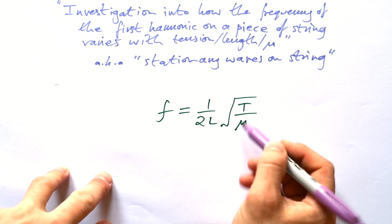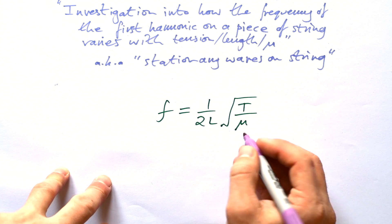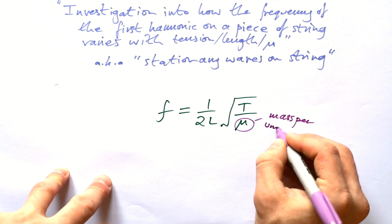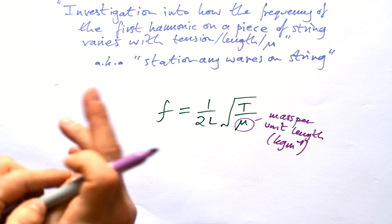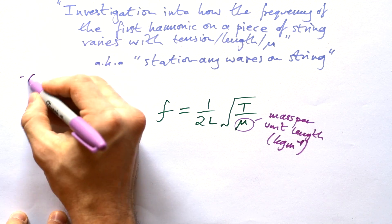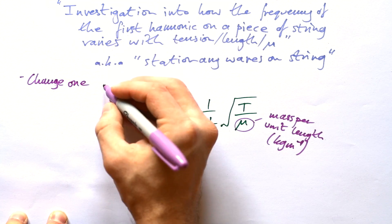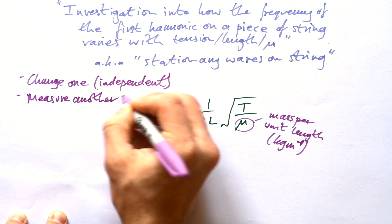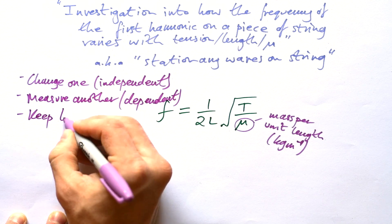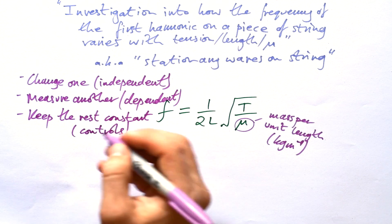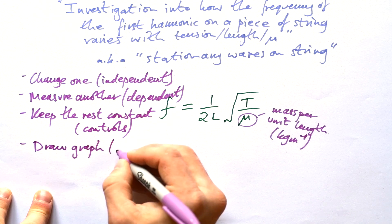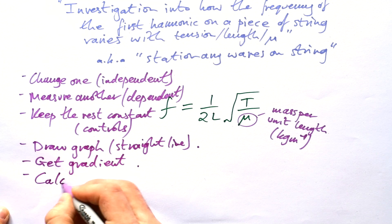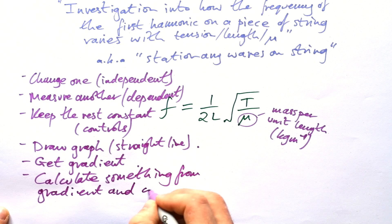L is the length of the piece of string, T is the tension — the force pulling on the end of the string — and mu is mass per unit length, so that's kilograms per metre of string. Generally what we want to do with these experiments is change one of these things — that's our independent variable — measure another, that's our dependent, and keep the rest constant, those are our controls. Then finally, we want to draw a graph that's a straight line, find the gradient, and calculate something from the gradient to compare with a real value.